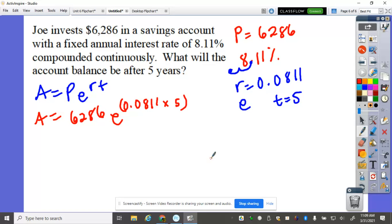And using our calculator here, 6,286, second E raised to the 0.0811 times 5, that will give us A is equal to $9,429.33 in five years.